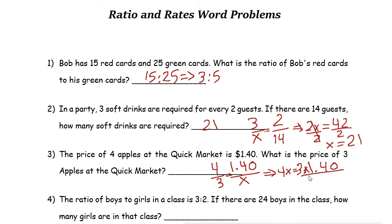Now if you divide both sides by 4, 4 and 4 cancel out. x equals to 3 times 1.40, then 3 times 1.40 divided by 4. So here you can use a calculator or you can just multiply it.